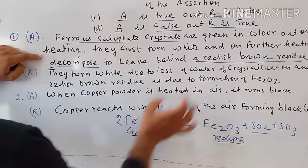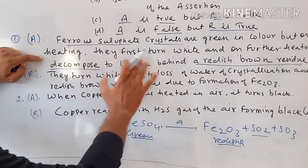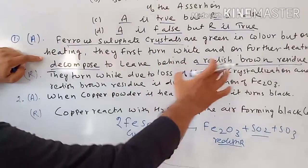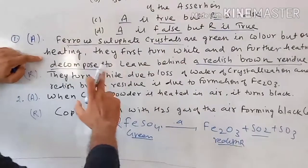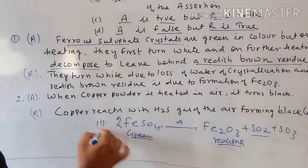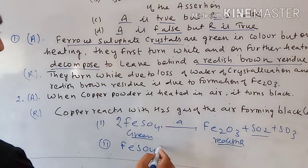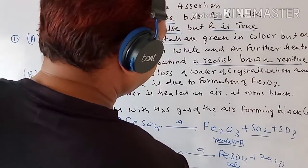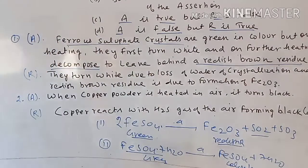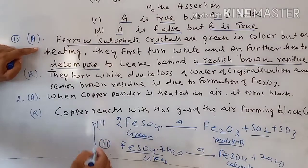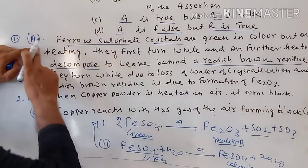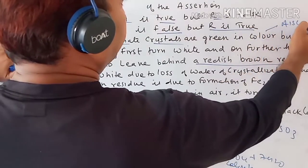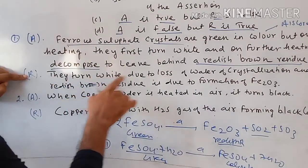Ferrous sulfate crystals are green in color, but on heating they first turn white — they release the water of crystallization molecules. On further heating, they decompose to leave behind a red-brown residue. So this reaction involves two steps. The Assertion is correct and the Reason is also correct.